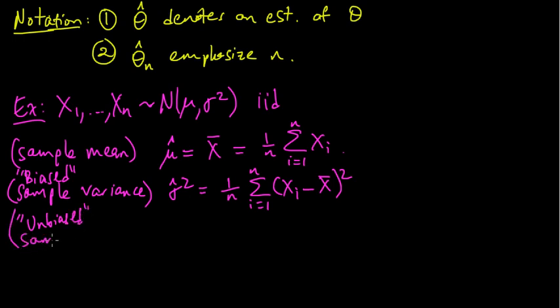And there's another estimator of the variance, another estimator which is commonly used, the unbiased sample variance. Sometimes people write s squared. That is 1 over n minus 1 times the sum, as i goes from 1 to n, of xi minus the sample mean squared.